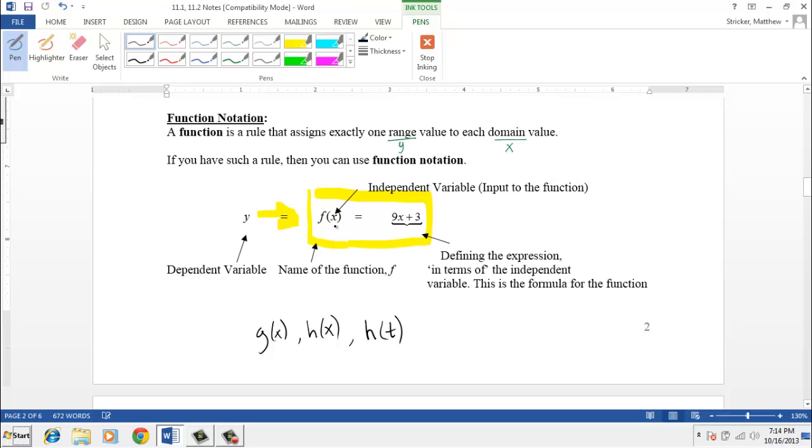And the variable that's inside the parentheses, that's our independent variable, that's where we put the input, the x value, or in this case the t value. And then the right hand side of the equation is where we define the function, that's what we tell is going on to the input. That's the formula for the function.